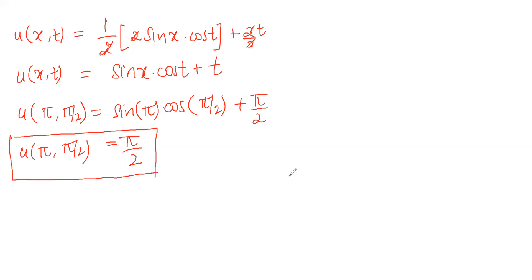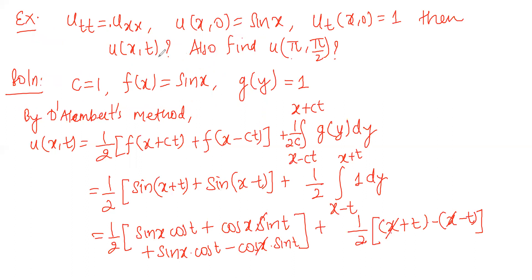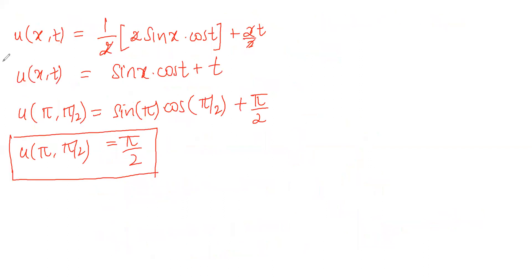D'Alembert's method is quite easy to solve — it doesn't take much time and gives the solution in a very efficient manner. Suppose they only asked for u(π, π/2) directly. Then rather than finding u(x, t) fully, I can simply plug in π and π/2 directly into the D'Alembert formula. Let me demonstrate this alternative approach.